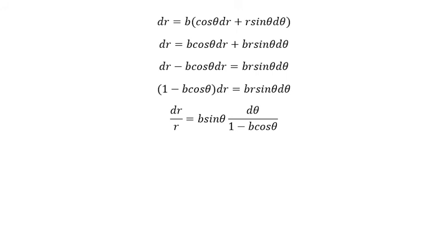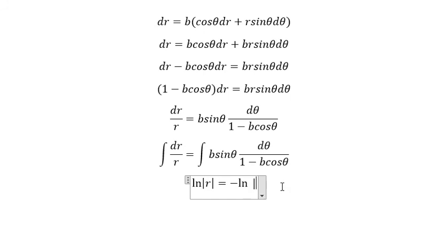Next, we put the integral for both sides. This one you got ln of the absolute value of r. On the right, we got negative ln of the absolute value of 1 minus b cosine θ.